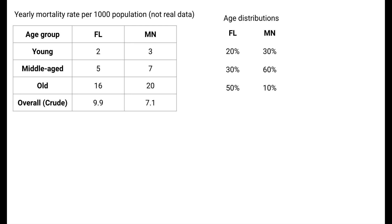In this example, comparisons of mortality rates within age groups was quick, and they told a clear story — there were only three age categories, and the mortality rates in one population were uniformly higher than in the other population. Oftentimes, there are many more age categories, and not such a clear difference in the age group-specific rates. In those cases, we can use the direct standardization method to compute an adjusted mortality rate for each population.